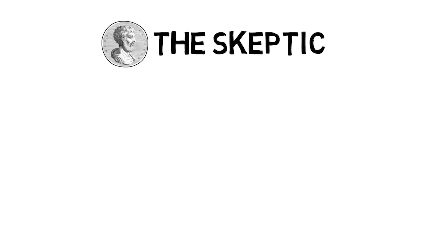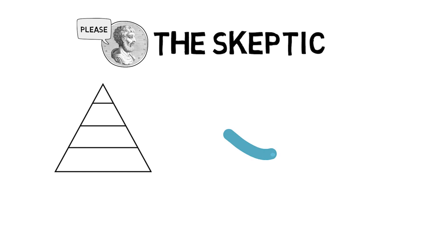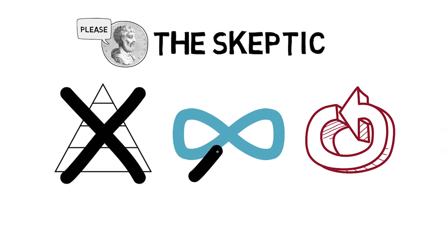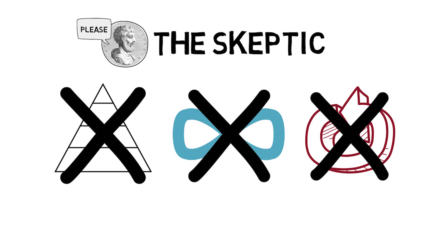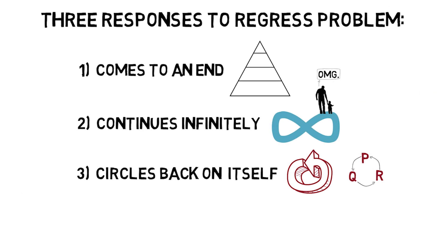The skeptic claims none of these options can generate genuine justification. So since this applies to all of your beliefs, you have no justified beliefs. But more important than the skeptical take on this is how these three options — that the chain ends somewhere, that it goes on infinitely, or that it circles back on itself — give us direction in trying to figure out the structure of epistemic justification. And in fact, all of the primary views of epistemic justification fall somewhere under these three, with a fourth being skepticism: just the denial that there are justified beliefs.